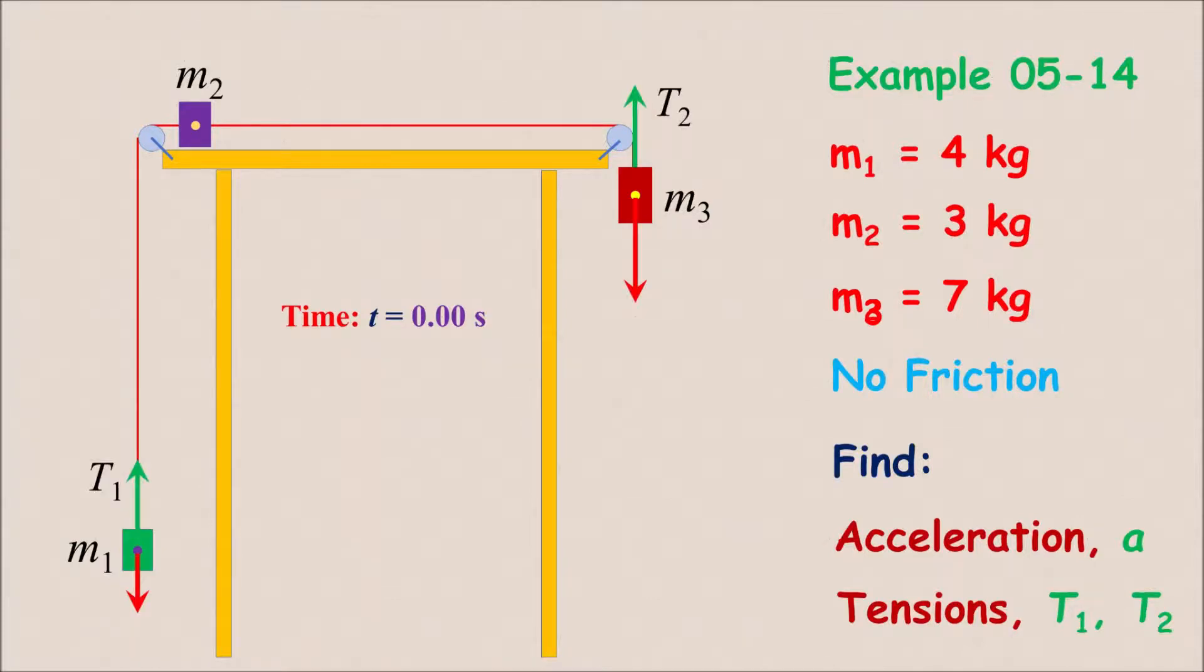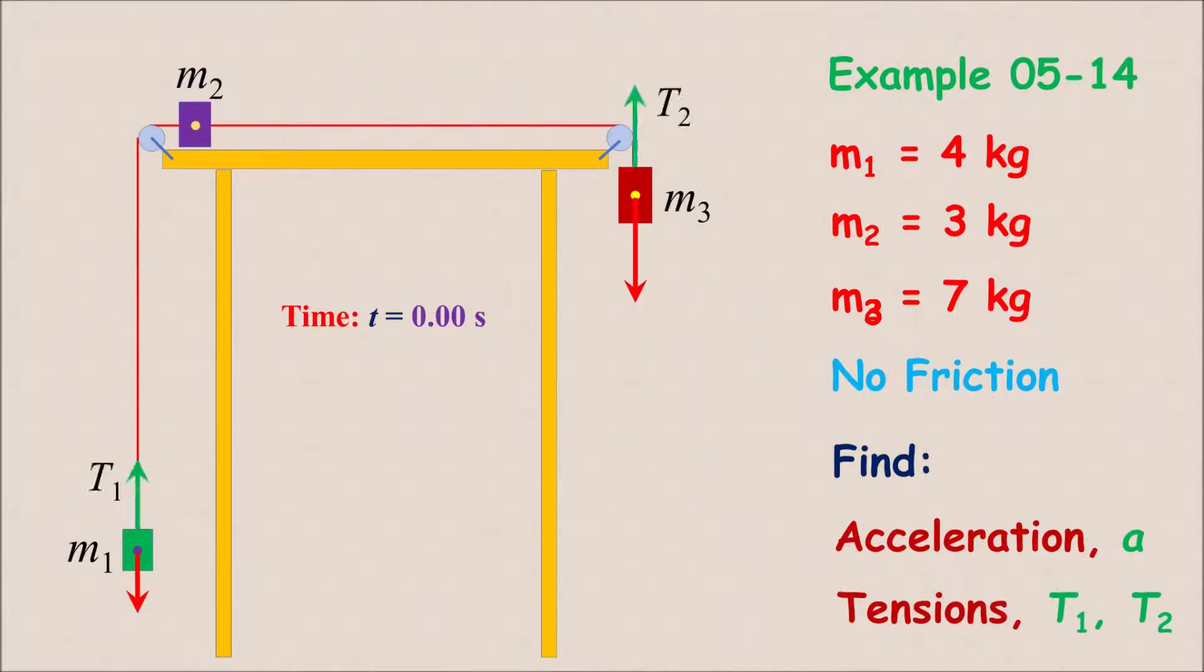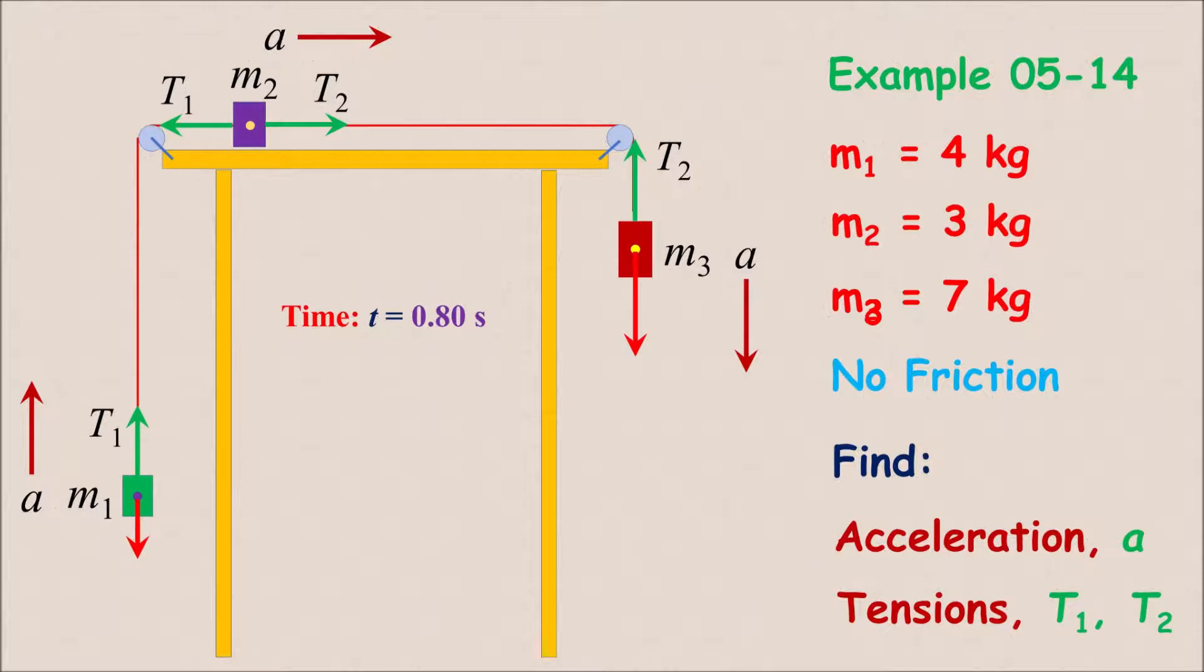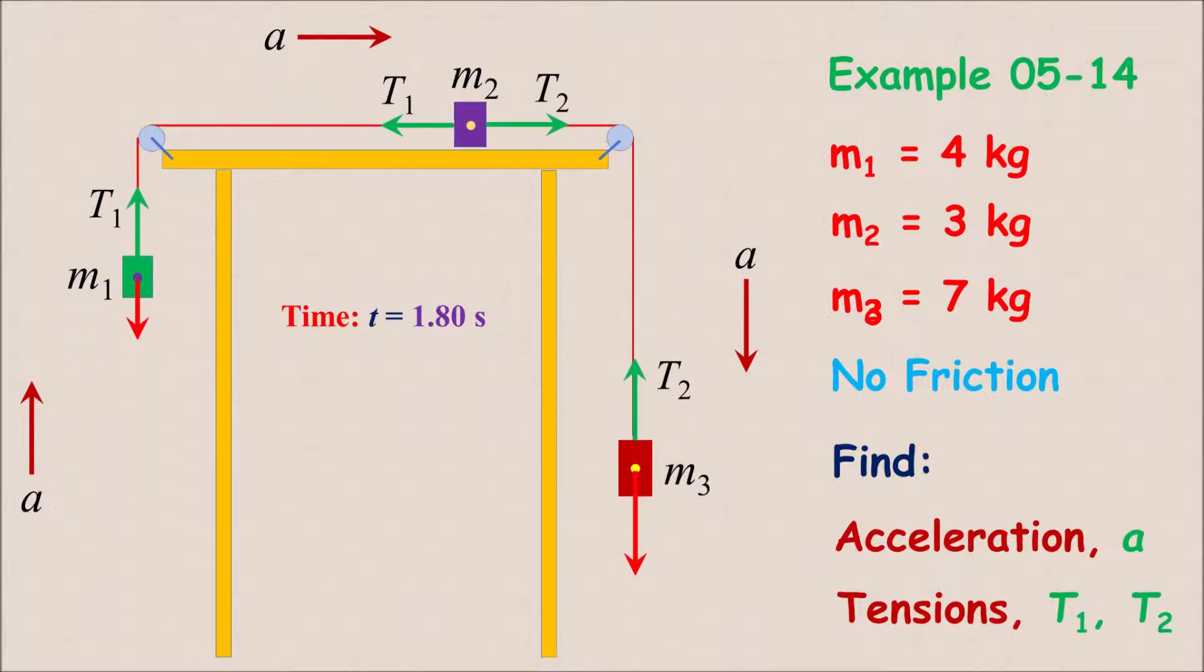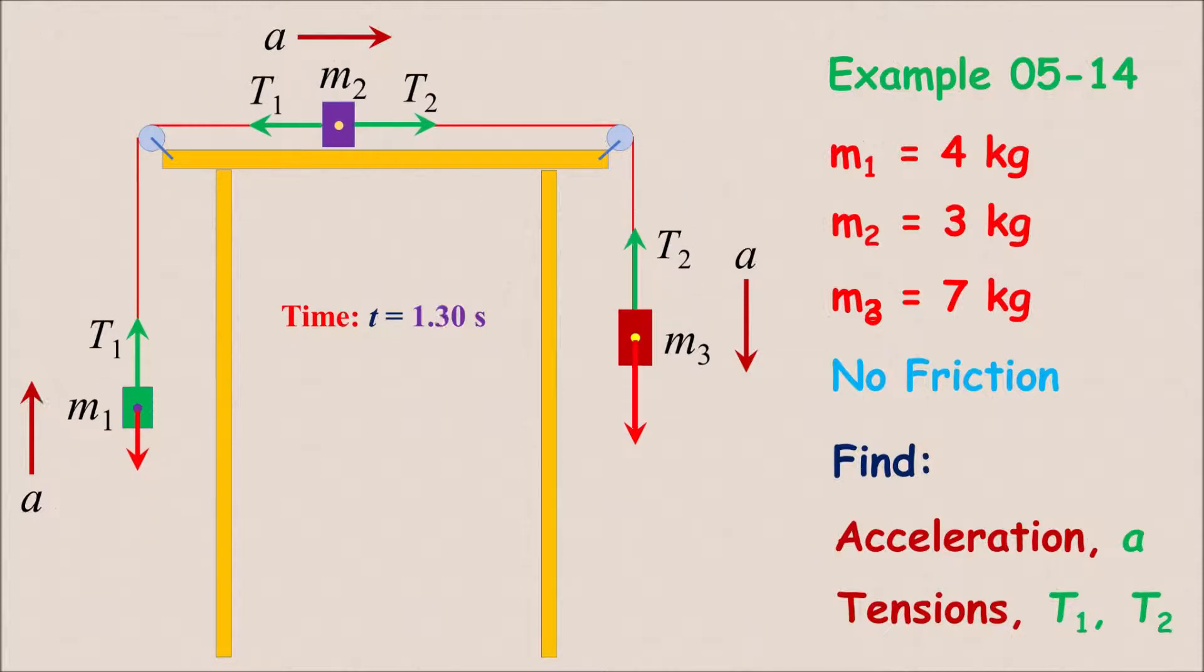Hi everyone, here is another interesting example of Newton's law where the three blocks of masses m1 4 kg, m2 3 kg and m3 7 kg in this animation are released from rest and move without friction. We would like to find the acceleration of the blocks and the tension in the strings.